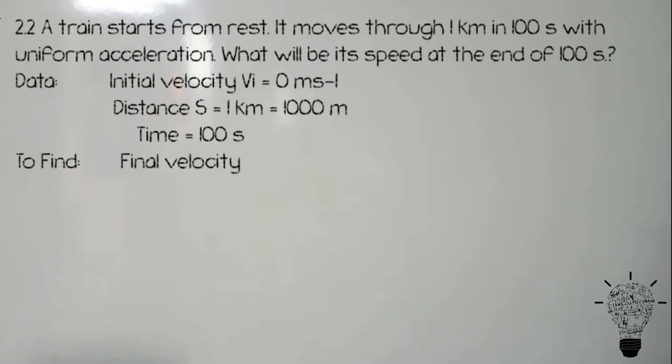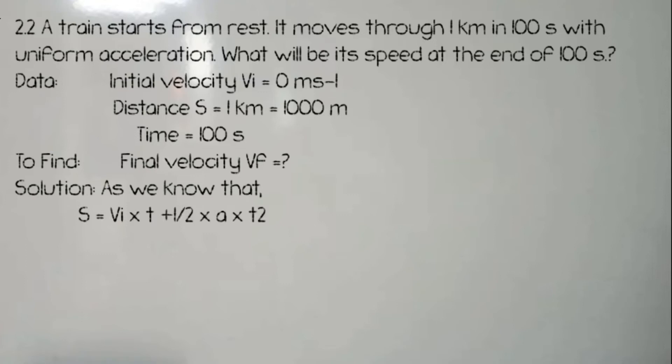Final velocity formula is the first equation of motion: VF = VI + AT. But acceleration is not given, so we will find acceleration using the second equation of motion: S = VIT + 1/2 AT².